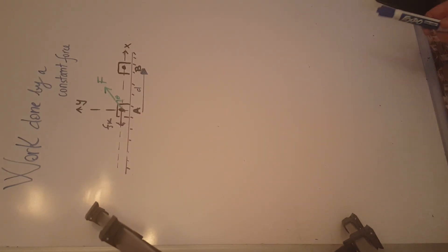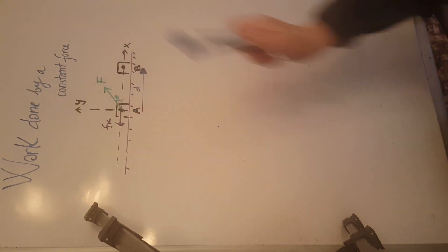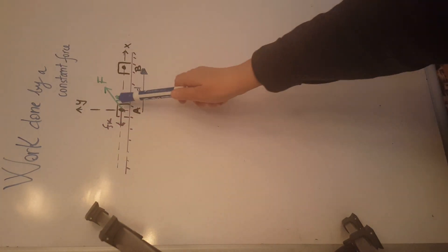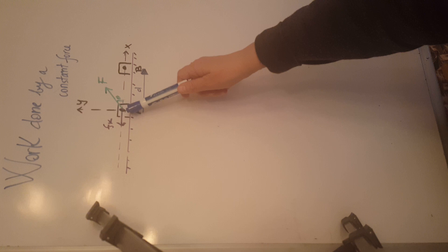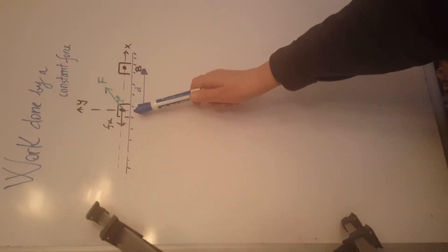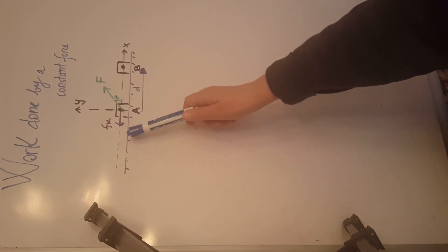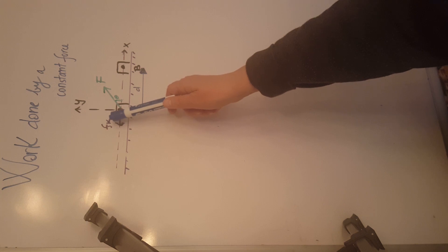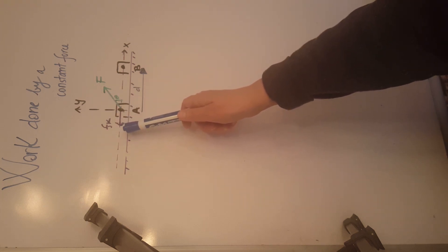Hello everyone! This YouTube video is going to show you how to calculate the work done by a constant force. We have an object on a flat surface being pulled by a force that makes an angle theta with the horizontal from point A to point B. This surface is rough, so there is a force of friction parallel to the surface in the opposite direction of motion.